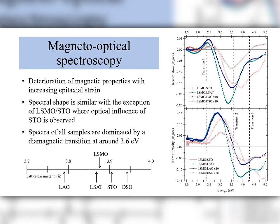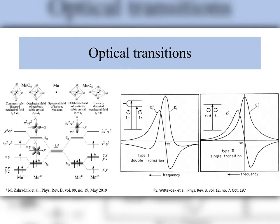For better analysis, we can use these spectra to calculate the off-diagonal elements of the permittivity tensor. But before we do, let me remind ourselves of the types of optical transitions. We consider two types. The first is the double transition, sometimes referred to as a diamagnetic transition for historical reasons. This is a transition between the ground state and an excited state that is split due to the combined effects of spin-orbit coupling and the exchange field. It manifests as a bell-shaped curve in the real part of the off-diagonal permittivity tensor, and the imaginary part shows a dispersive relation around the center frequency.